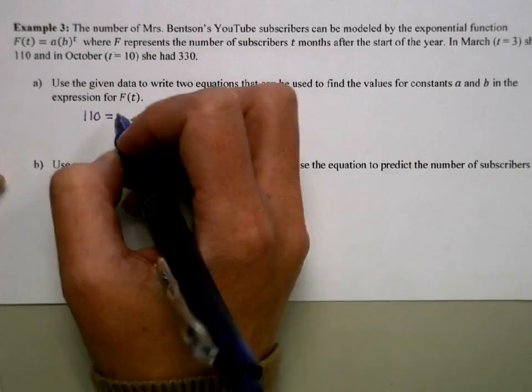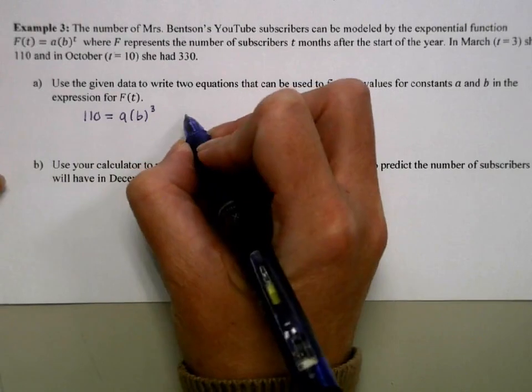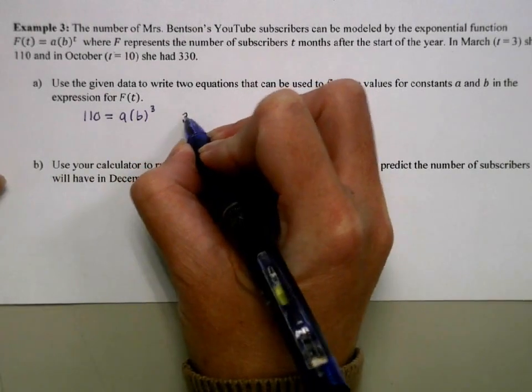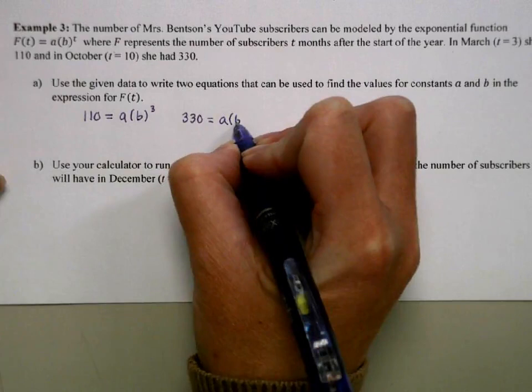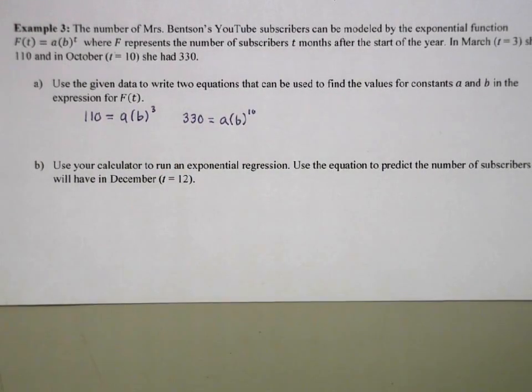So for March, we're going to have 110 = ab^3. And then our next equation would be 330 = ab^10. So to actually write this equation, we are going to use the calculator.